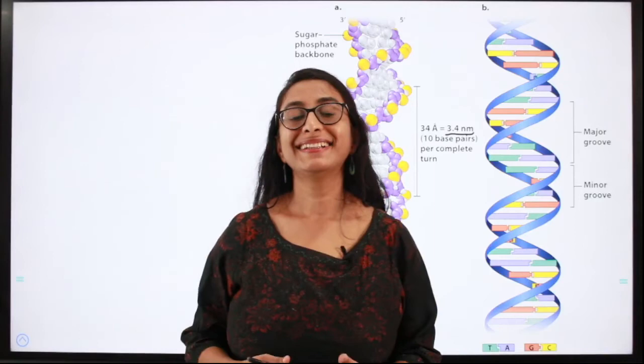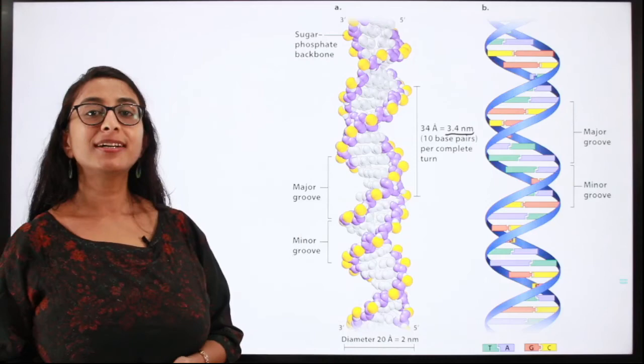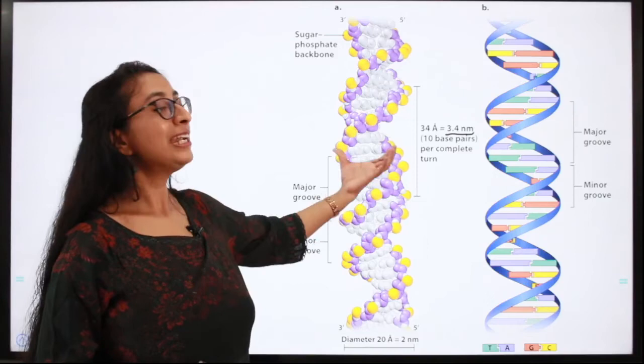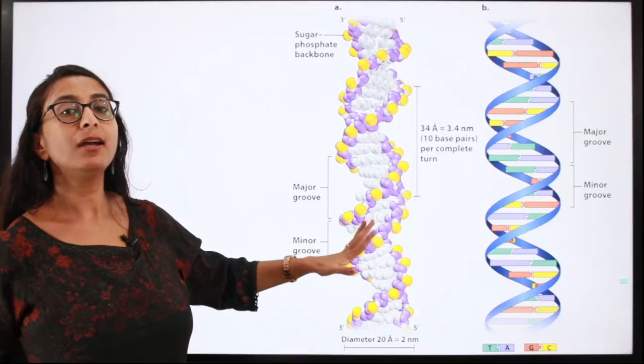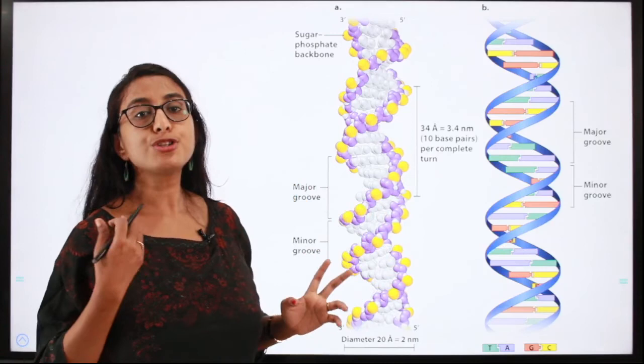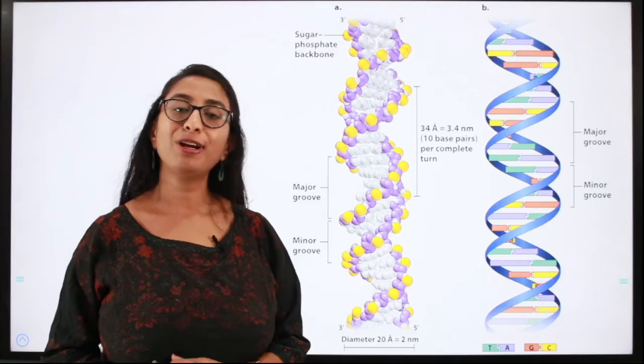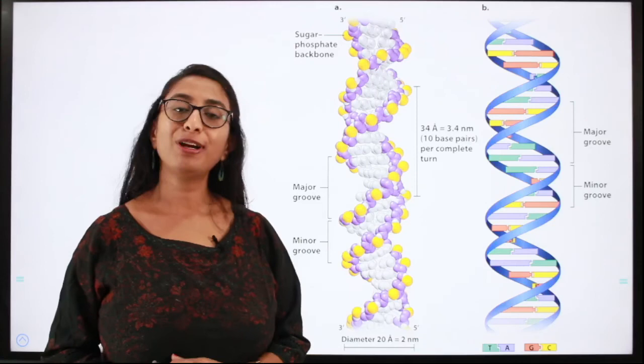I hope you had a good understanding of the DNA structure, its composition, the occurrence of DNA in prokaryotic and eukaryotic cells, the different bonds present in DNA, and the salient features of the double helical structure proposed by Watson and Crick based on Chargaff's rules and X-ray studies. We shall continue the series of lectures for the NEET examination.